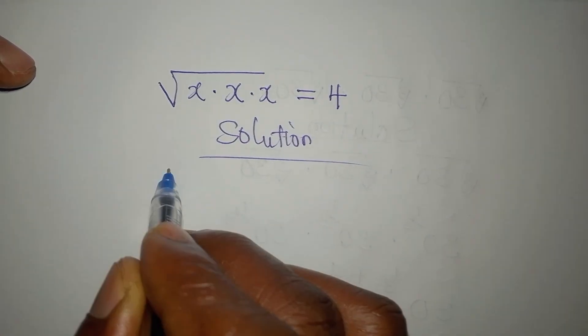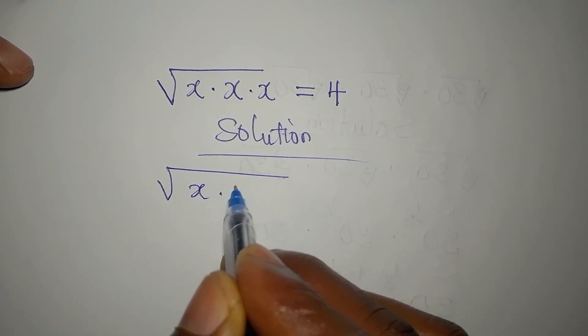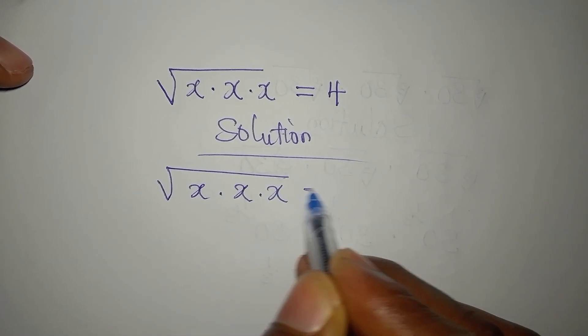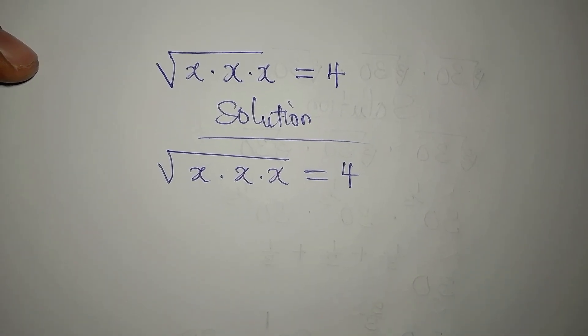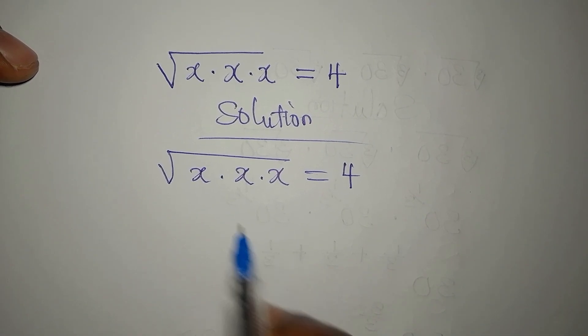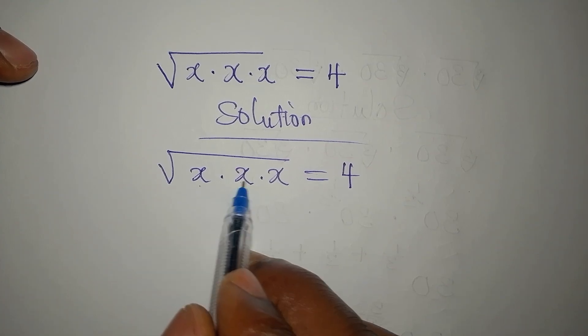We have the square root of x times x times x equals 4. What is the first step? Multiply this, this, and this.